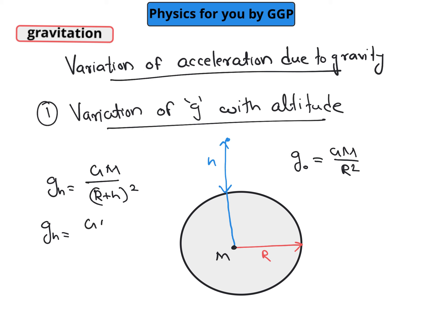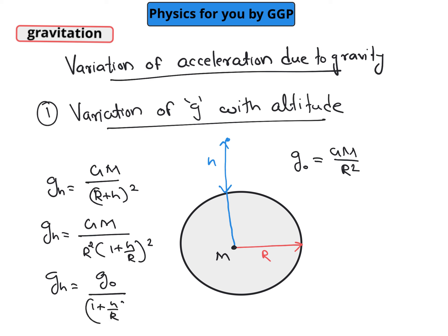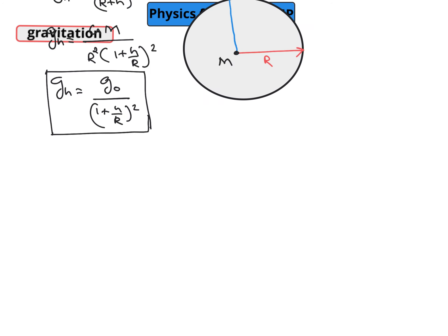So g_h can be written as GM, and if you take r outside, we can write it as r squared into (1 plus h divided by r) squared. So g_h equals g_naught divided by (1 plus h divided by r) squared. This equation gives the variation of acceleration due to gravity with respect to height h above the Earth surface.